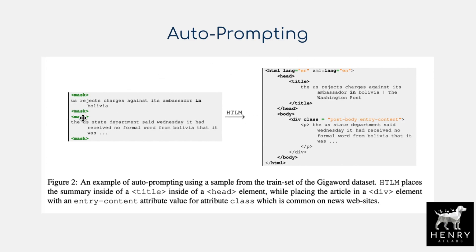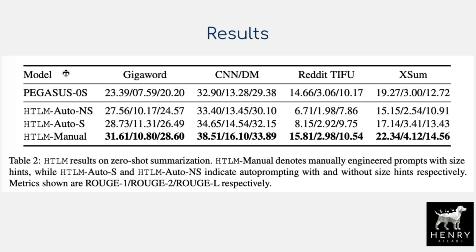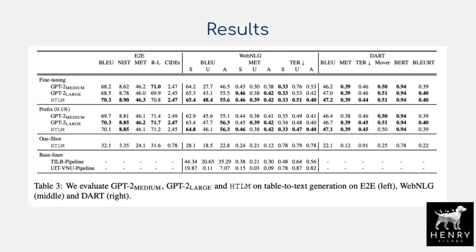These are the results on zero-shot summarization, setting the state of the art over the previous Pegasus model — where Pegasus masks out a whole sentence in the pre-training objective — compared to this idea of using title tags to guide zero-shot summarization.